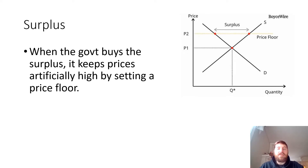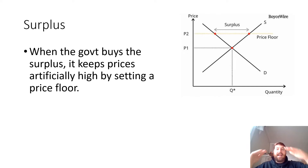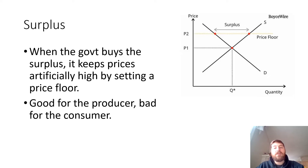When the government buys the surplus, it forces prices up as supply goes down, because the government takes that stuff off the market. For example, they do this with farm goods — they buy a million bushels of corn and leave it in a silo, not selling it. Therefore it's not surplus anymore because it's not on the market. It still exists but it's not for sale, so it is not considered part of supply. This gets prices higher than they would be without government interference, and that is called a price floor.